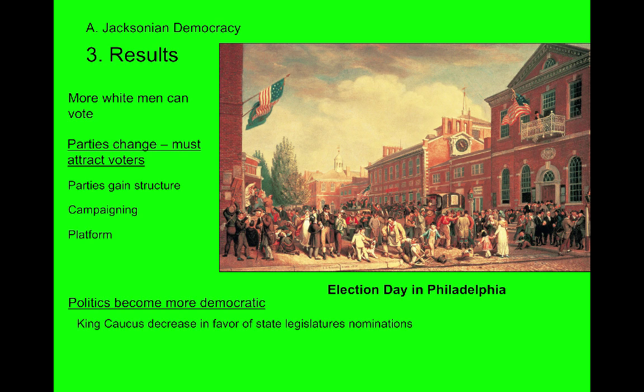We also see the idea of King Caucus dying. King Caucus was the practice in the age of Washington, Adams, and Jefferson where elite men of either party would meet in a smoke-filled room and pick the candidates for Congress, Senate, or the presidency — the common people had no say in choosing candidates. But now that seems very elitist. The people start demanding that instead of a small elite caucus choosing candidates, the people should choose their own candidates, giving more power to the people instead of the elite.